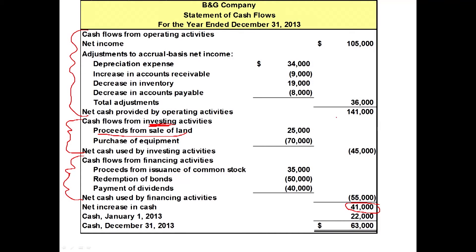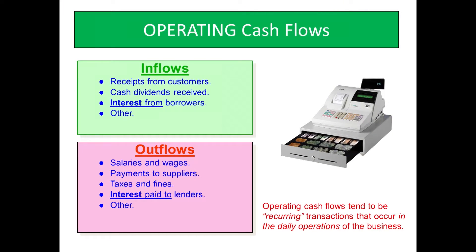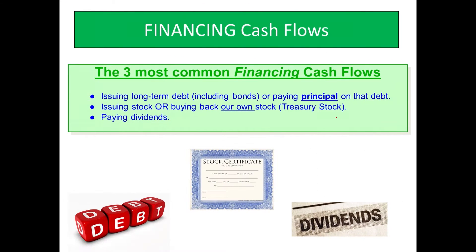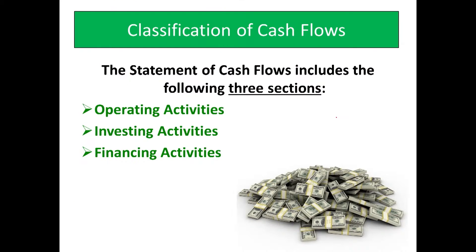One of the first things we need to be able to do is look at cash flows and understand what type of cash flow it is. We're going to talk about operating cash flows, investing cash flows, and financing cash flows — three different sections.